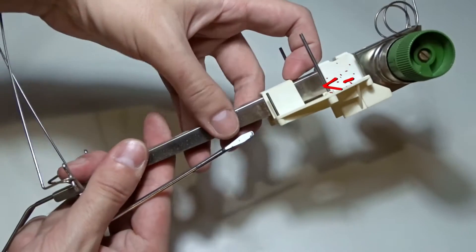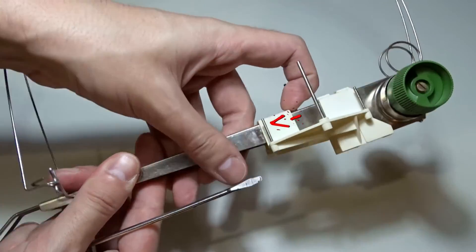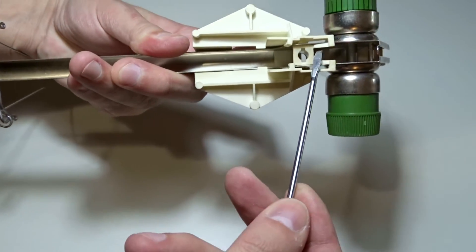To remove the paraffin ring, press the lock fingers down with a screwdriver. Be careful, you can break them easily.